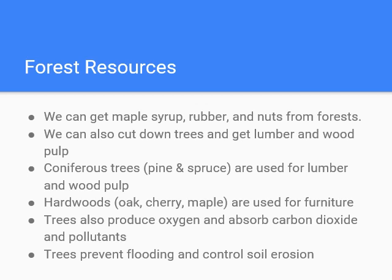Coniferous trees like pines and spruce are used for lumber and wood pulp. They tend to be fast growing and have softer wood. Hardwoods like oak, cherry, and maple are used for furniture or maybe flooring.